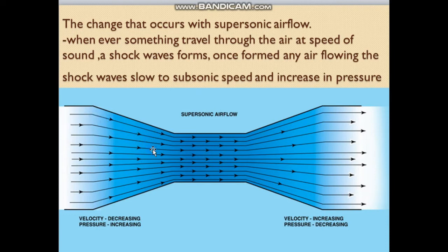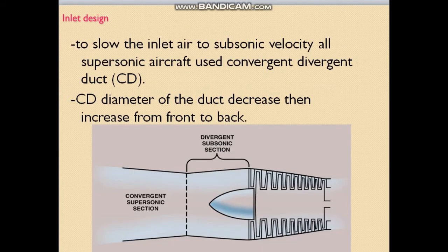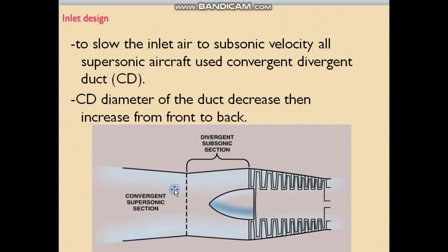As we see here, this is the convergent shape and this is the divergent shape. To slow the inlet air to subsonic velocity, all supersonic aircraft use a convergent-divergent duct. The convergent-divergent duct decreases in diameter and then increases from front to back. As we see here, this is the convergent section and this is the divergent section.